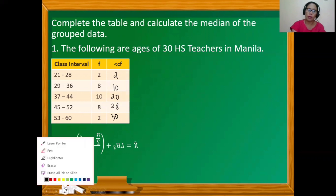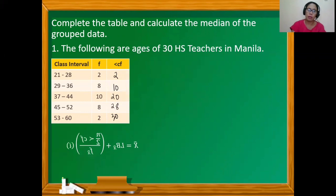Now working on the formula for the median: the median is equal to the lower boundary of the median class plus the product of (n/2 minus less-than cf) divided by f sub x, times the class size. We have to identify the given values, starting with what the median class is.